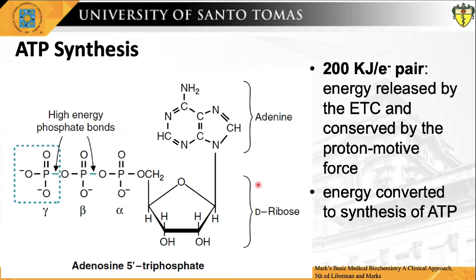How is a concentration gradient of protons transformed into ATP? Electron transfer releases and the proton motive force conserves more than enough free energy — about 200 kJ per mole of electron pairs — to drive the formation of a mole of ATP, which requires just about 50 kJ. Mitochondrial oxidative phosphorylation therefore poses no thermodynamic problem. But what is the chemical mechanism that couples proton flux with phosphorylation?